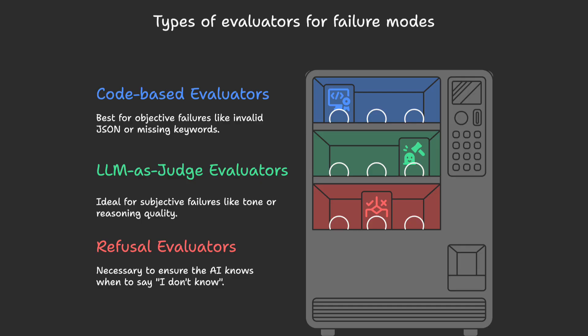Refusal evaluators test the ability of the model to say it doesn't know the right answer. For that, we construct an evaluation set with answerable and unanswerable questions. We mark it as a pass when the model answers what it knows and refuses what it doesn't, and fail when it hallucinates answers. This makes sure the AI knows when to say 'I don't know.' LLM-based evaluators are the most expensive, but it's still worth using them for persistent failure modes. By default, start with cheap code-based checks, then look into LLM-as-a-judge evaluators for problems you expect to always come up that are hard to check with code. Always check your LLM-as-a-judge against human judgment and keep your prompts aligned until the result is acceptable.